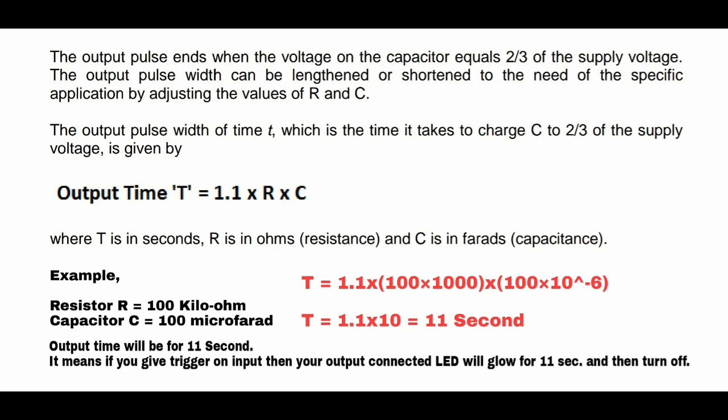For example, take a resistor of 100 kilohms and a capacitor of 100 microfarads. First, convert: 100 kilohms = 100 × 10³ ohms, and 100 microfarads = 100 × 10⁻⁶ farads. So T = 1.1 × (100 × 10³) × (100 × 10⁻⁶) = 1.1 × 10 = 11 seconds. That means with these R and C values, your output time will be exactly 11 seconds.